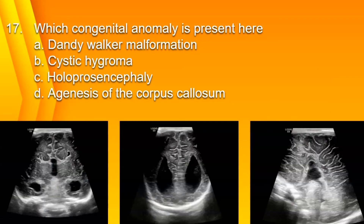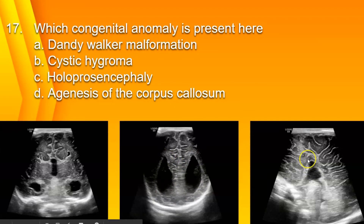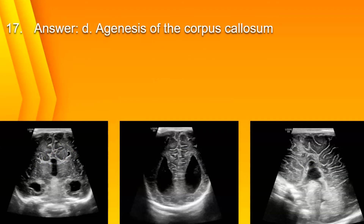Number 17: Which congenital anomaly is present here? A. Dandy-Walker malformation, B. Cystic hygroma, C. Holoprosencephaly, or D. Agenesis of the corpus callosum? The Dandy-Walker malformation affects the posterior fossa. A cystic hygroma would be a lymphangioma or large cyst in the neck. Holoprosencephaly would have a monoventricle appearance. Here you can see two ventricles, colpocephaly or teardrop-shaped lateral ventricles, no corpus callosum, and a U-shaped or bullhorn-shaped lateral ventricle appearance — indicative of D. Agenesis of the corpus callosum.